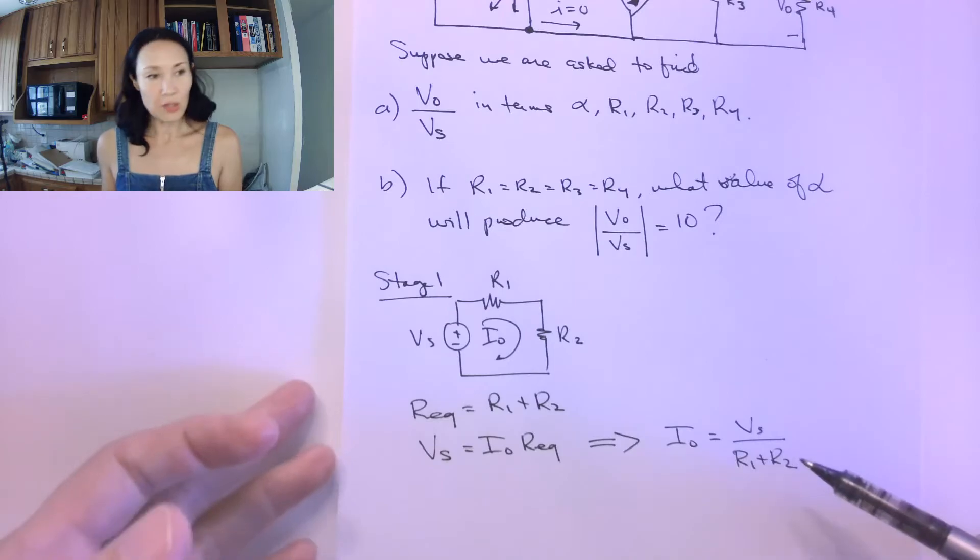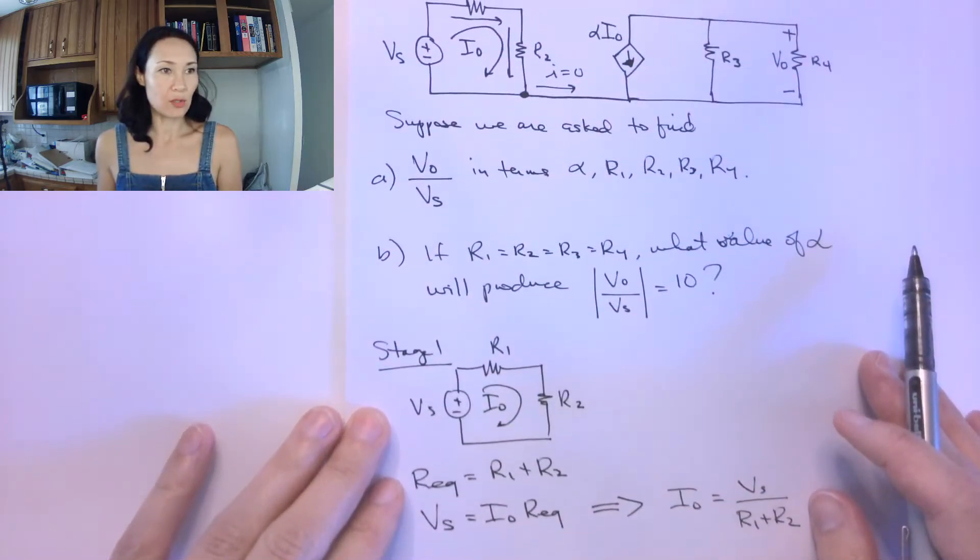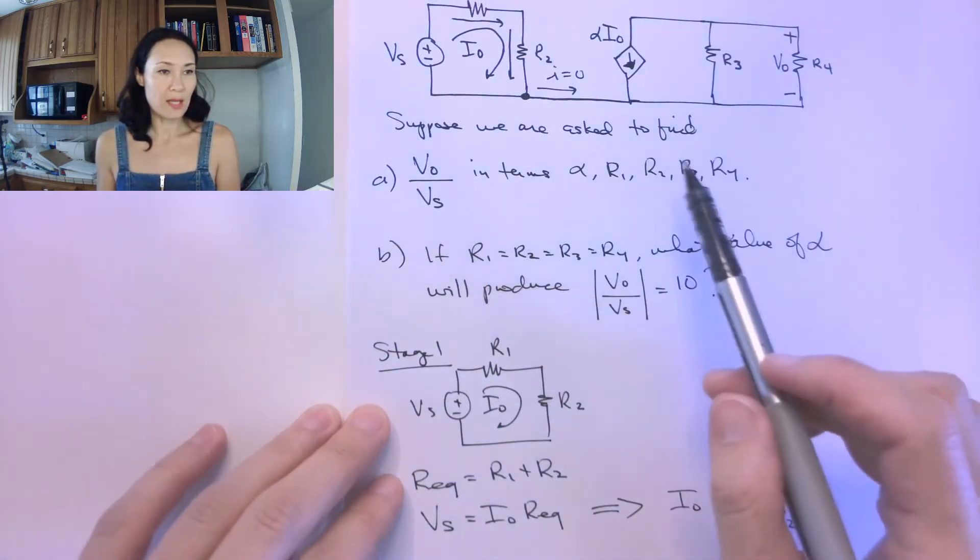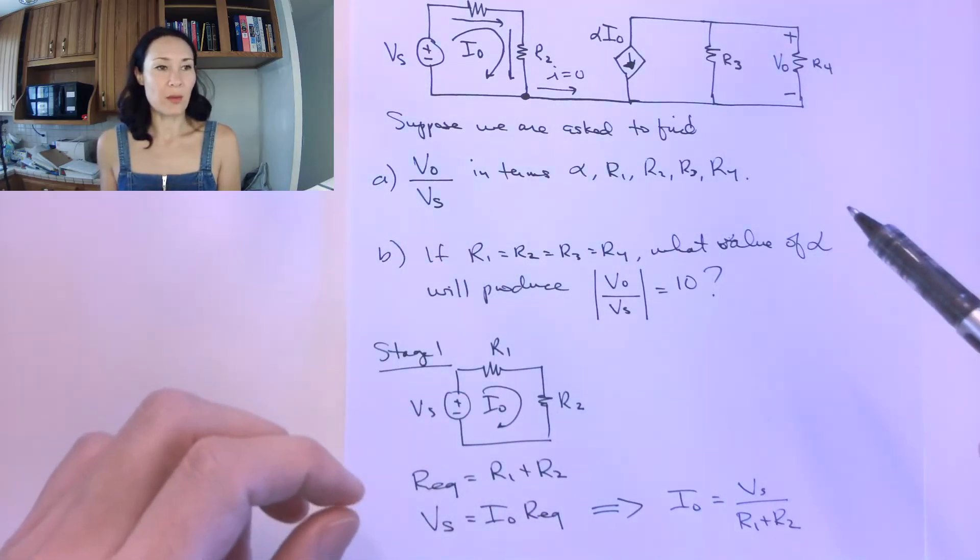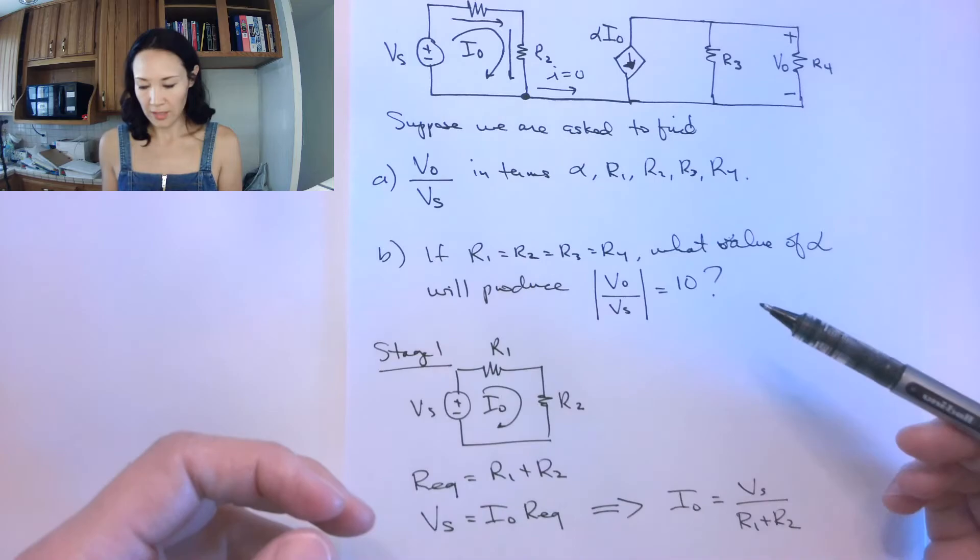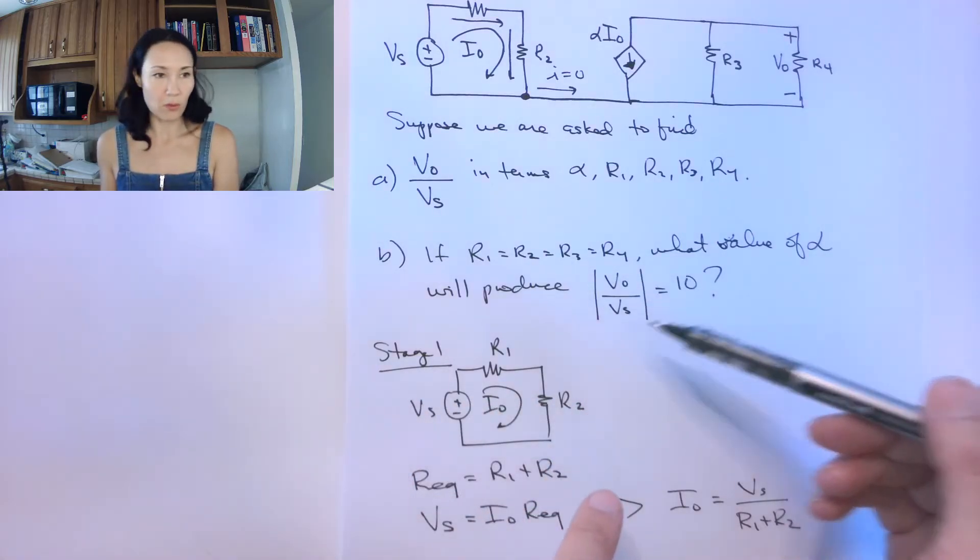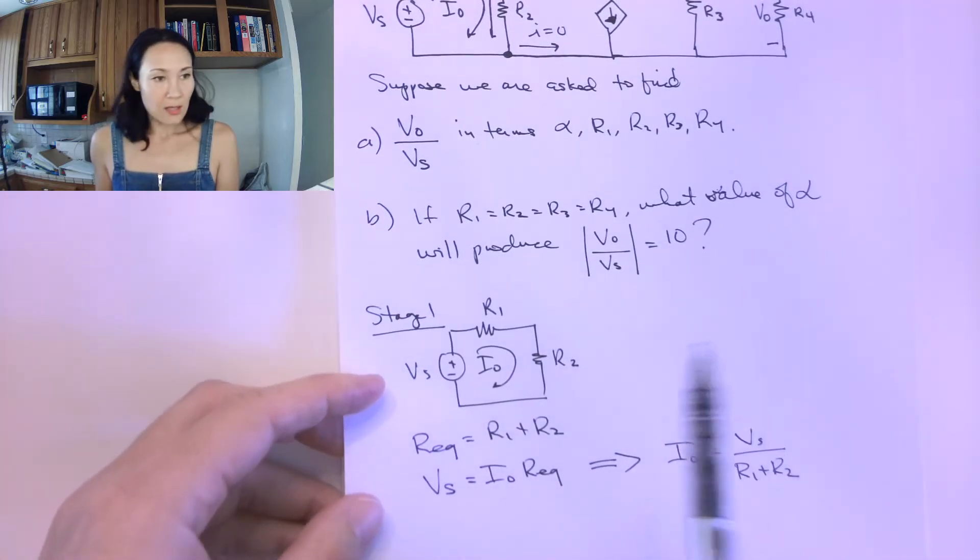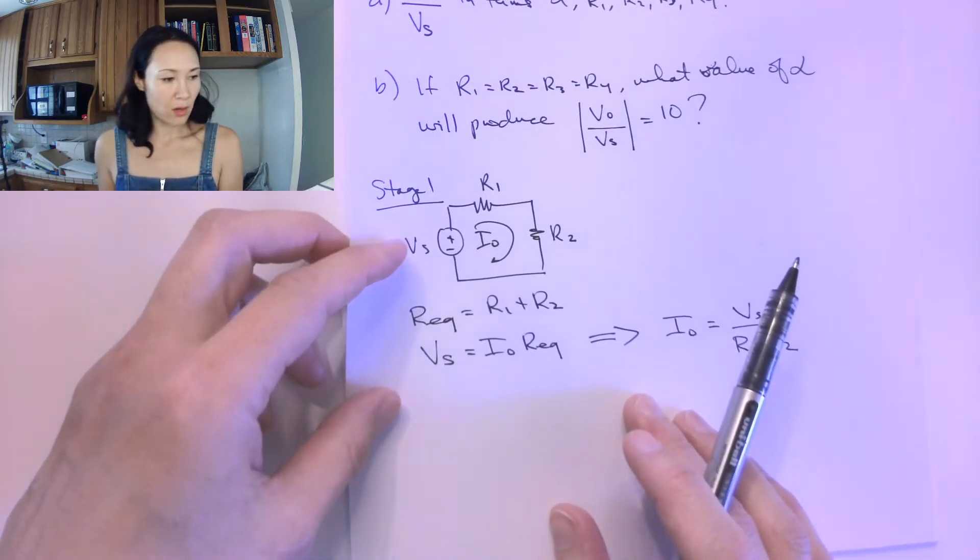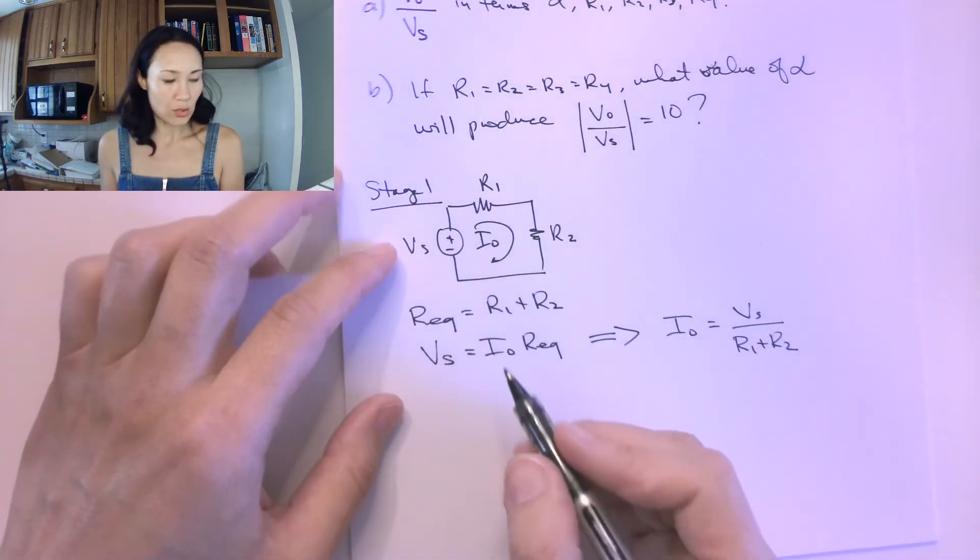I'm not going to put any numerical values in here because I'm doing this all symbolically. Then later on I can put in whatever resistance values that will give me the amplification factor that I need, namely this V0 over Vs equals 10. So now we're ready to turn our attention to stage 2 of the circuit.